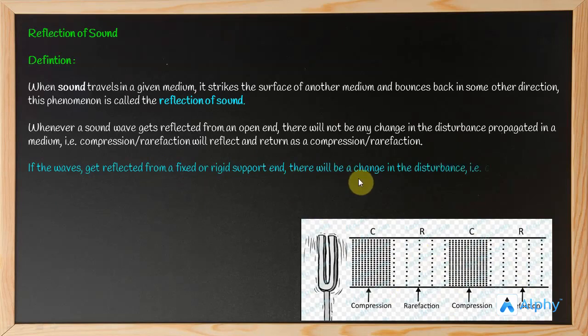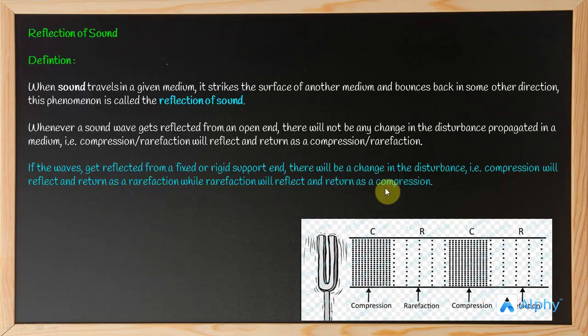Whenever sound waves get reflected from an open end, there will not be any change in the disturbance propagation in the medium. That is, compression or rarefaction will reflect and return as compression or rarefaction. When the waves get reflected from a fixed or rigid support, then there will be change in the disturbance. That is, compression will be reflected and return as rarefaction, while rarefaction will be reflected and returned as compression.